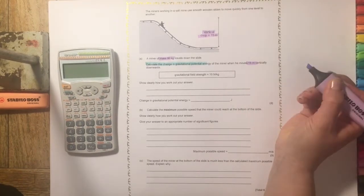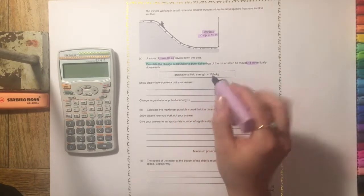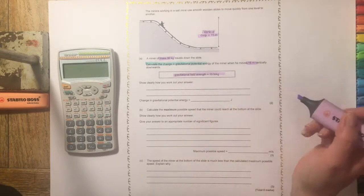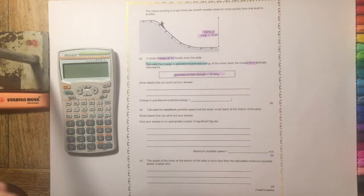Okay, so there's that 15 meters again. Gravitational field strength equals 10 newtons per kilogram. Show clearly how you work out your answer.